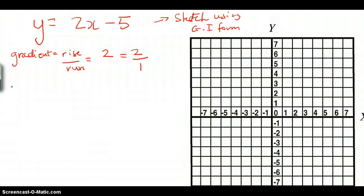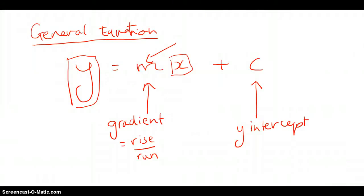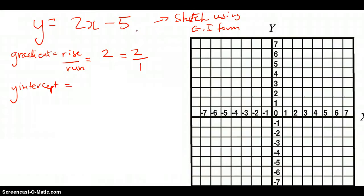The next piece of information we need is the y-intercept. Going back to our general equation, the y-intercept is the last number that doesn't have an x on it. Looking at our question, it has minus 5, so the y-intercept for this example is minus 5. Now that we've got these two pieces of the puzzle, we can start graphing.